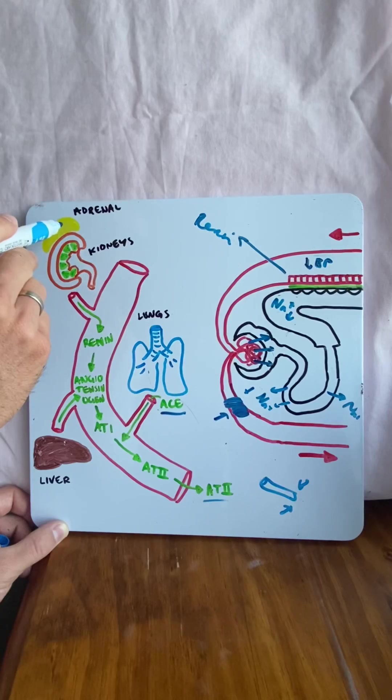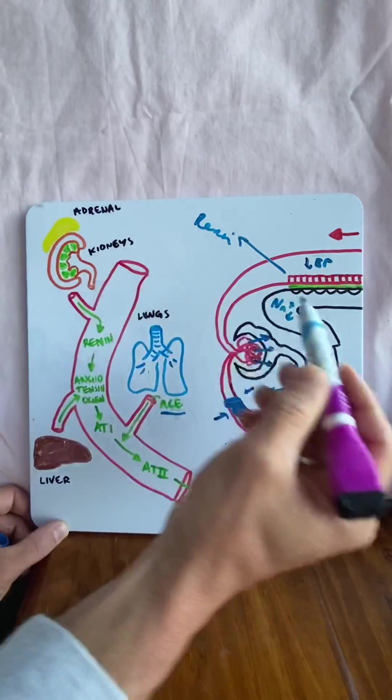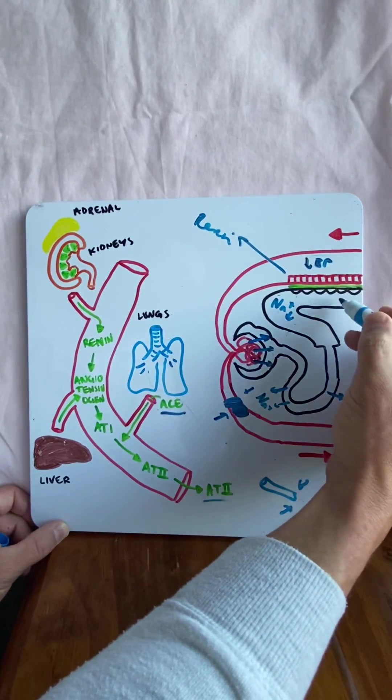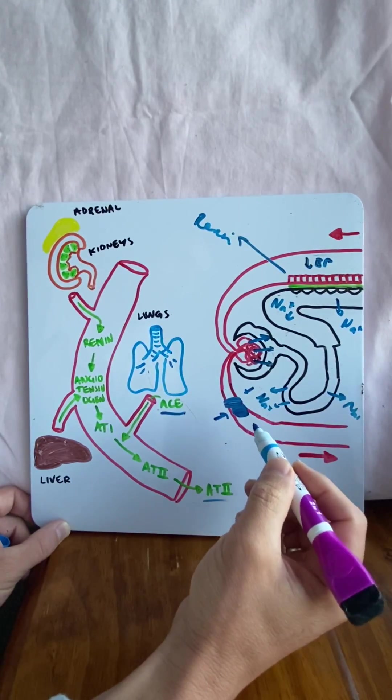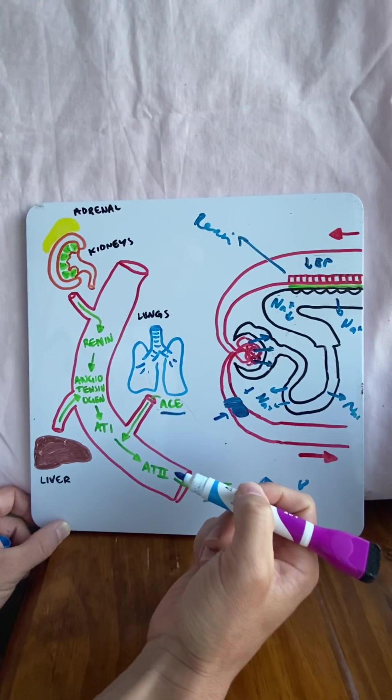What else does it do? It travels to the adrenal gland and releases aldosterone. Aldosterone travels to the distal convoluted tubule and throws more sodium back into the body. Why? Wherever sodium goes, water follows. Water's going to bulk up blood volume and blood pressure.